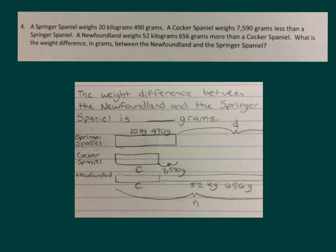Now a Newfoundland weighs 52 kilograms, 656 grams more than a Cocker Spaniel. That's why we have the Newfoundland with the weight of the Cocker Spaniel, which you will figure out first, put together with 52 kilograms, 656 grams. So first we will take this number here of 20 kilograms, 490 grams. We'll rename it as grams and subtract 7,590 grams from it.